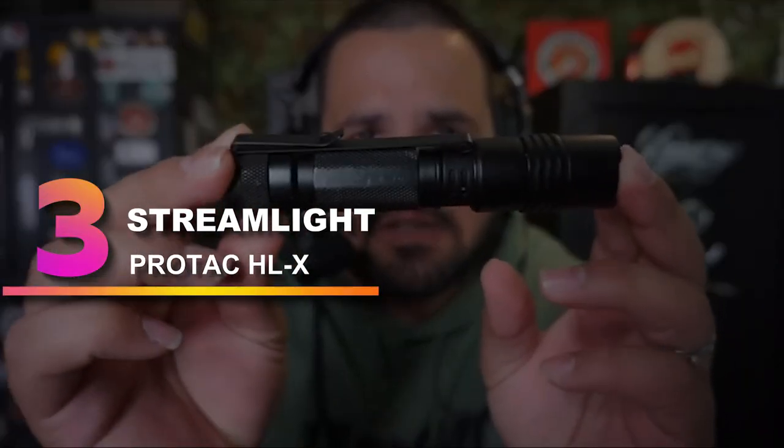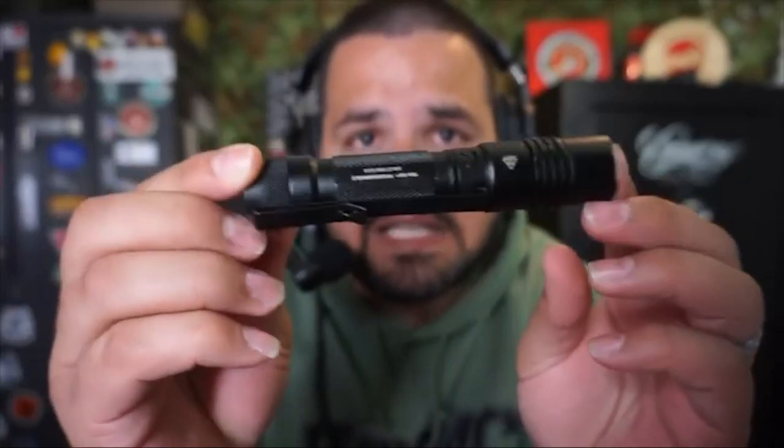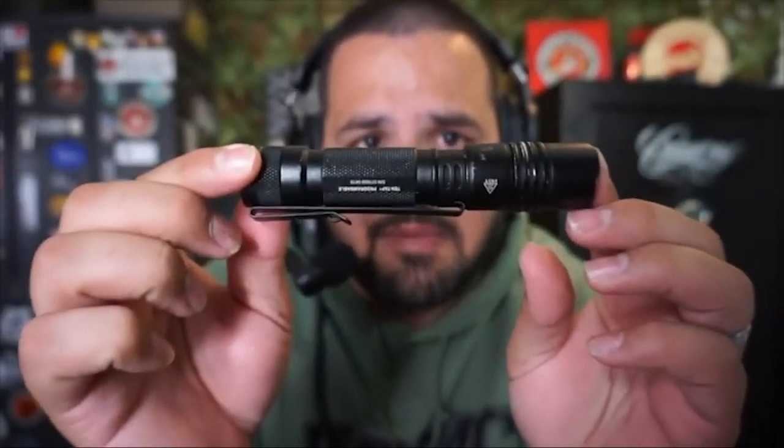Number 3: Streamlight ProTac HLX. Streamlight's ProTac HLX is another extremely popular flashlight among hunters and outdoorsmen, and for good reason. It's powerful, durable, versatile, and also available in a modded version that'll mount to the rail of your gun. If you scour through its thousands of 5-star reviews, you'll see why hunters and outdoorsmen love the HLX. It's bright, reliable, and serves multiple uses.